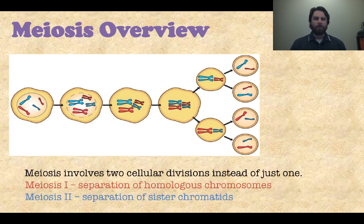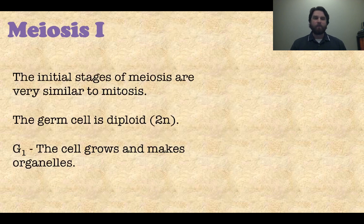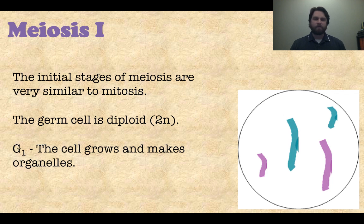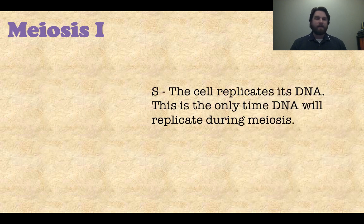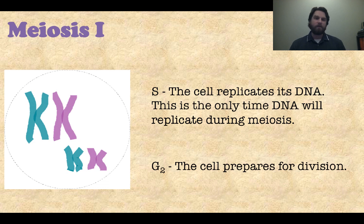Let's talk about meiosis with an overview diagram. There are two cellular divisions in meiosis — conveniently called meiosis I and meiosis II. The big difference: meiosis I is all about the separation of homologous chromosomes, and meiosis II is all about the separation of sister chromatids. Starting with meiosis I: the germ cell we begin with is diploid, 2N. It goes through G1 phase — cell grows, makes organelles. Then the S phase is when the cell replicates its DNA. Then G2 phase, where it prepares for division. So far, it's a lot like mitosis.